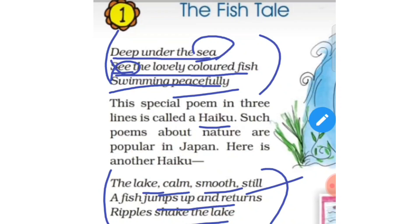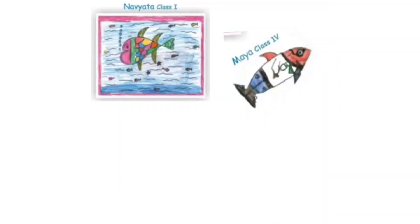Children, do you know any poem about fish? You can collect any poem about fish. Here are some drawings made by children. The first drawing is by Navyada, class 1, and the second drawing is by Maya, class 4. In Navyada's drawing we can see different colors, and Maya has used saffron, white, green, and blue.